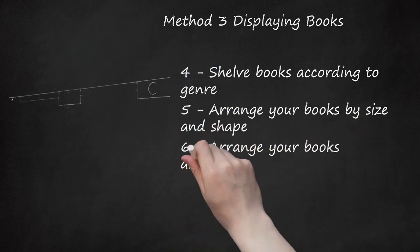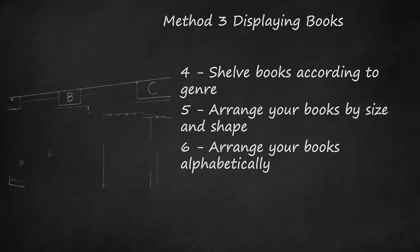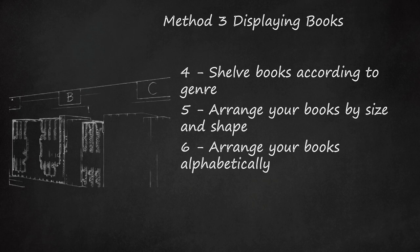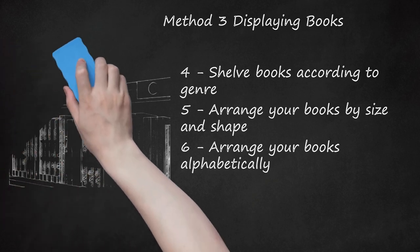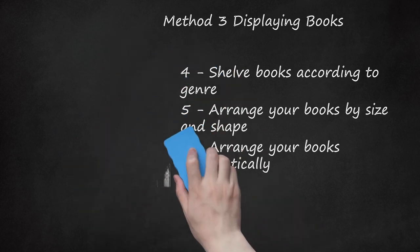Arrange your books alphabetically. If you've got more of a linear mind, it might make more sense to you to categorize your books alphabetically for easy reference. This may look a little more chaotic on the shelf, but you'll always know where everything is in the alphabet. Go by title or go by the last name of the author when you're alphabetizing your books.